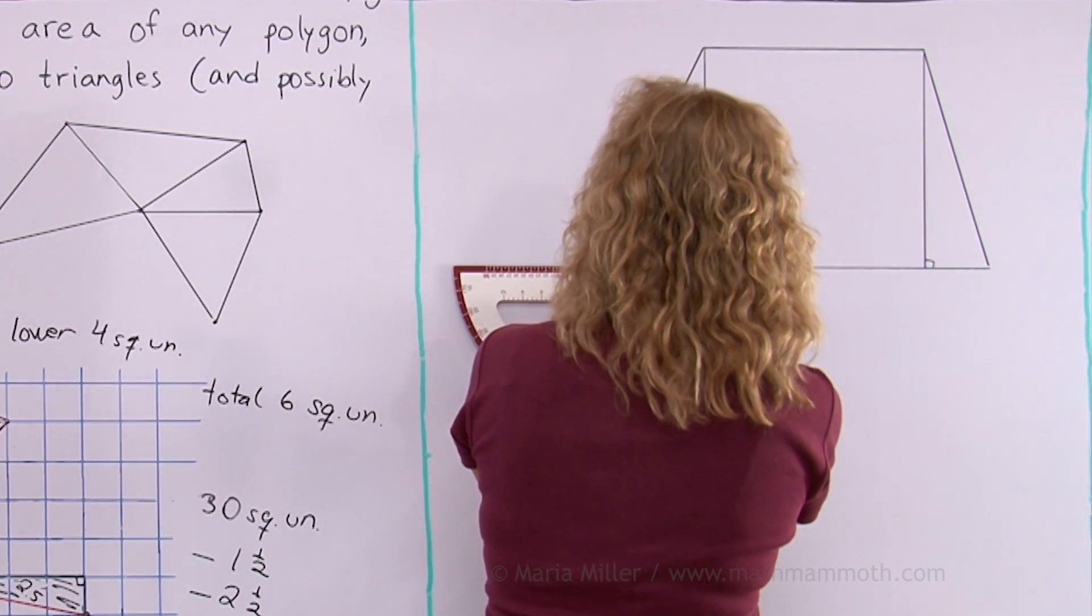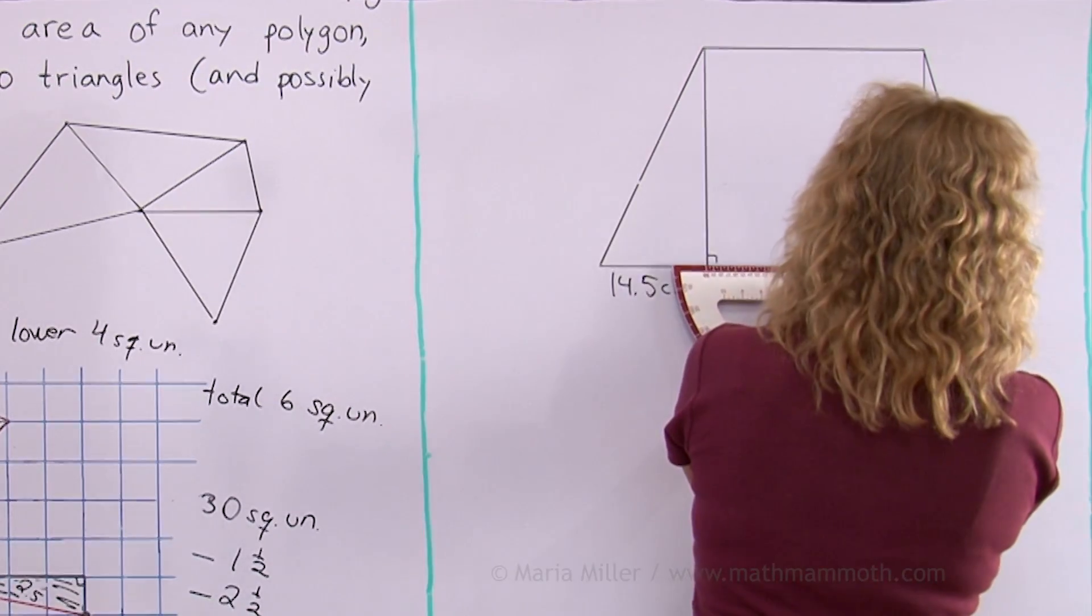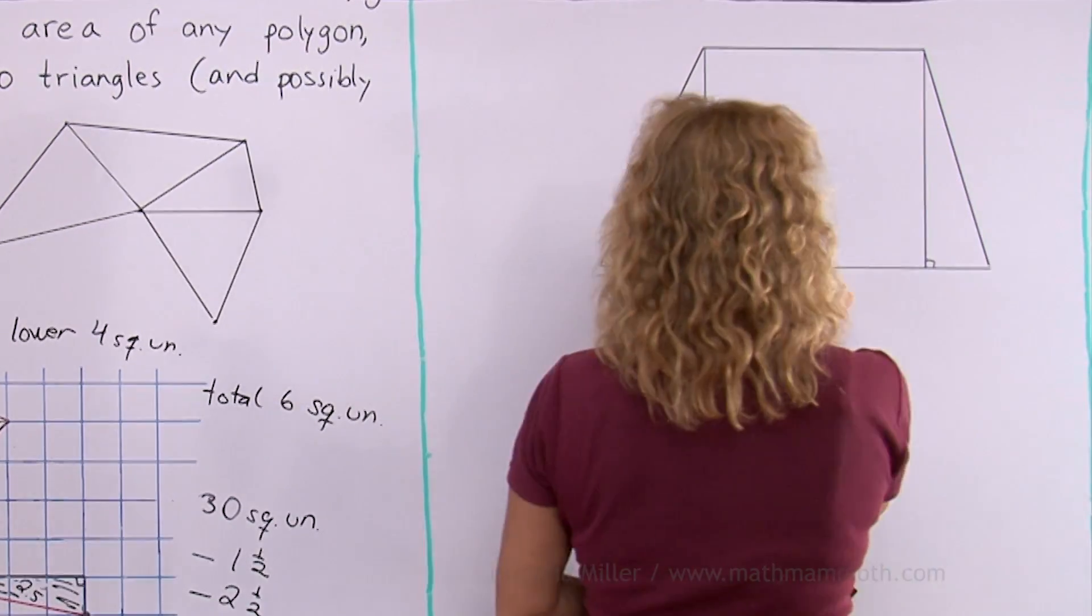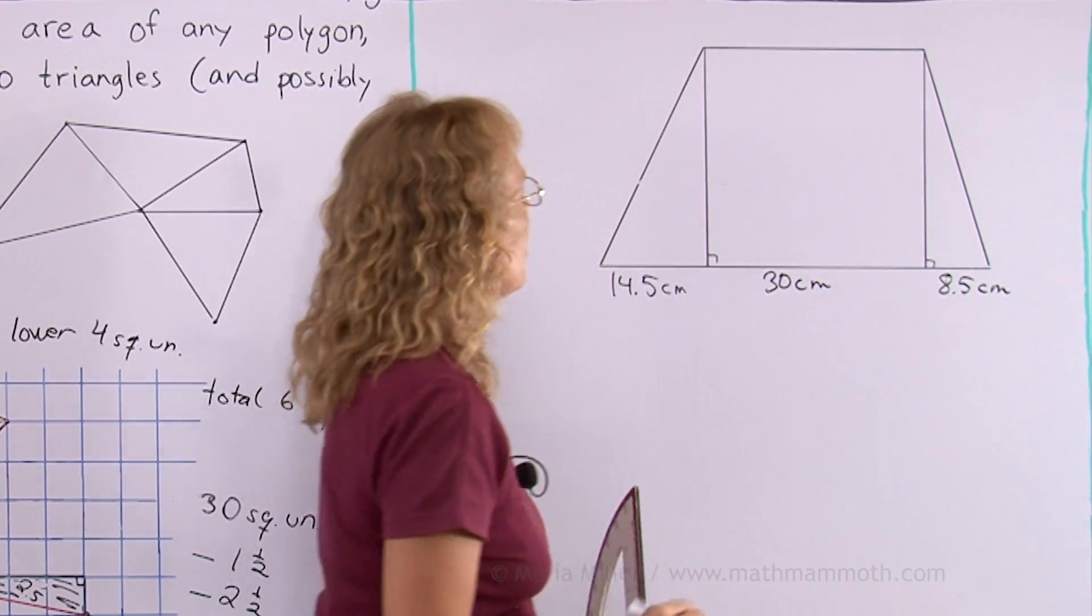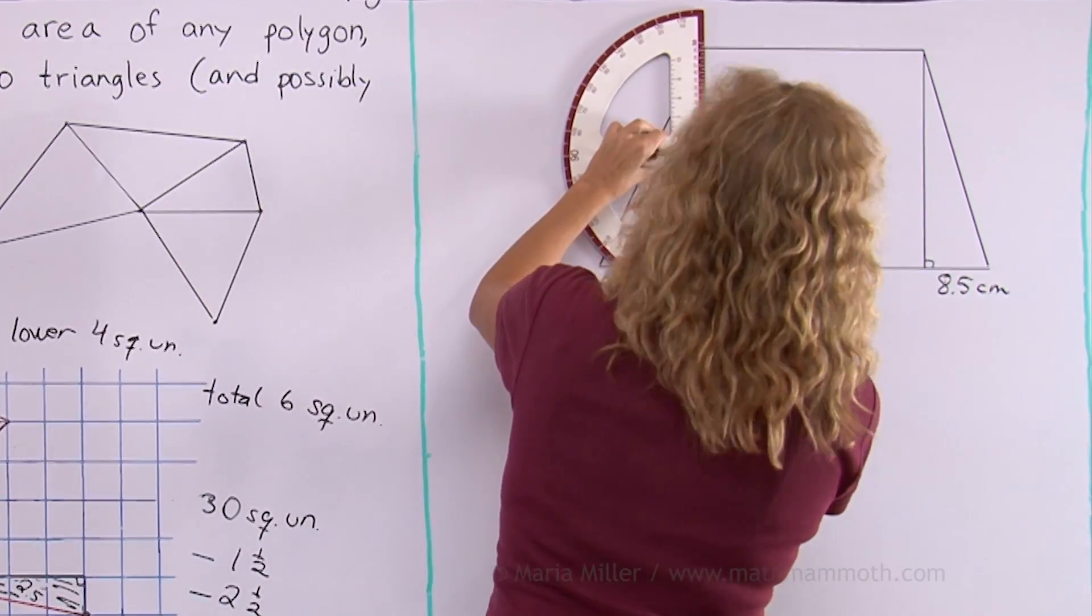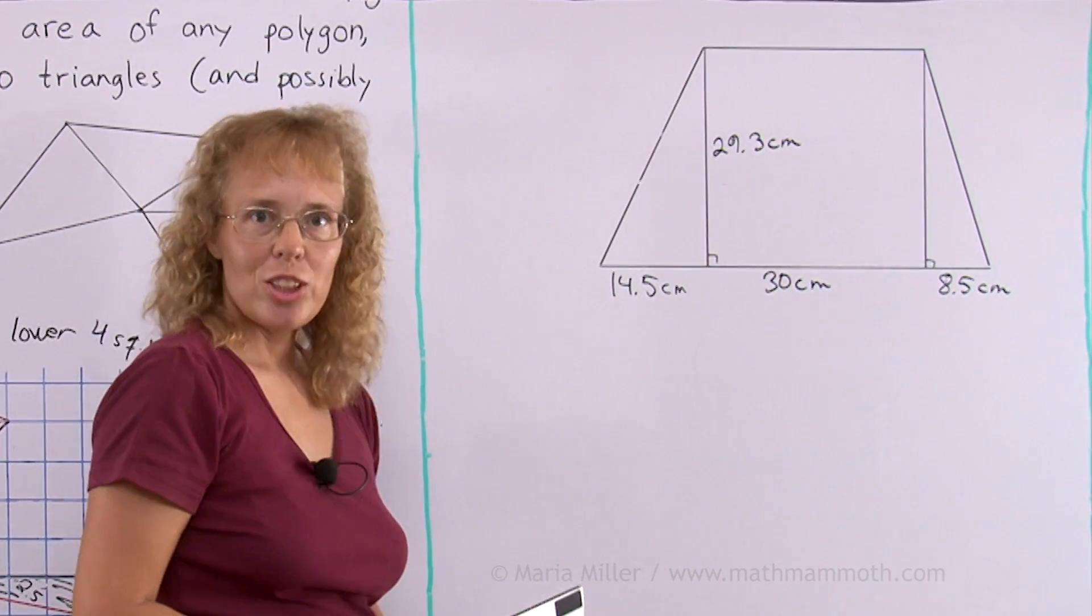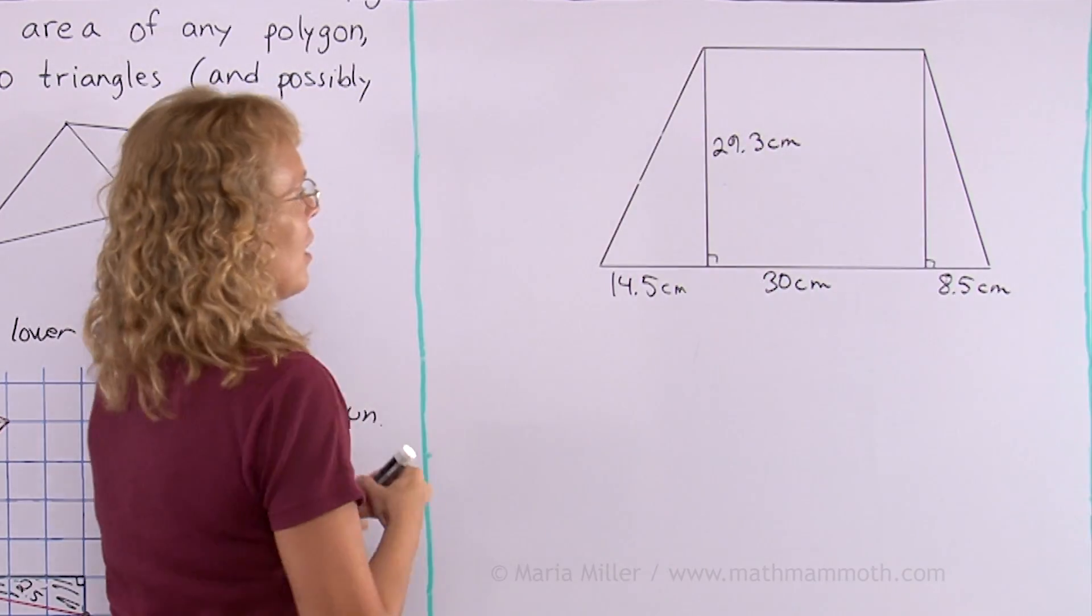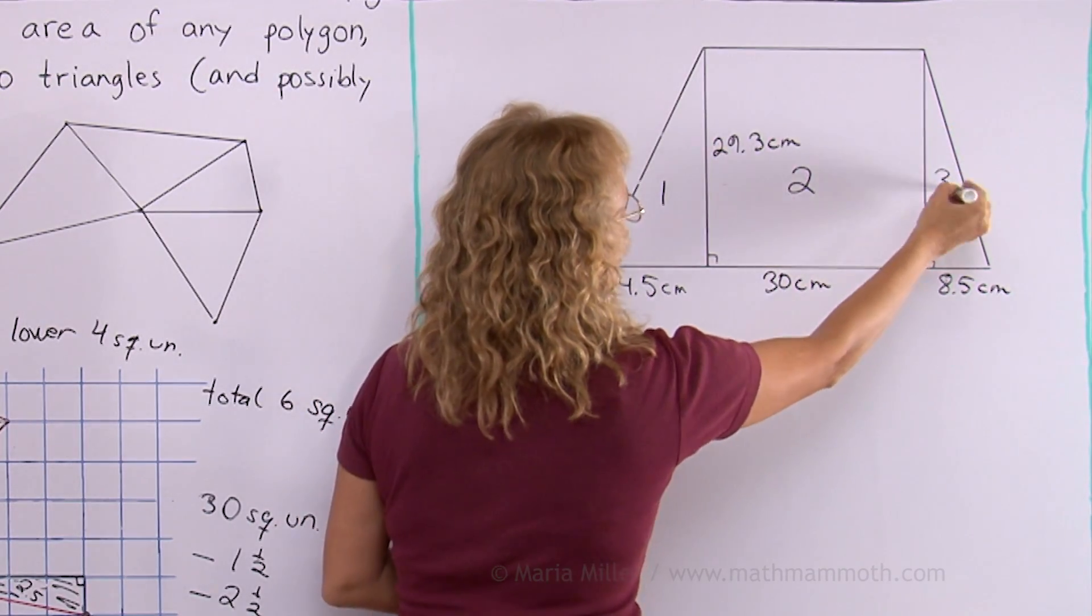This triangle has a base of 14.5 centimeters, this rectangle is 30, and this is 8.5. Then I need the height. Now I'm done measuring, we are ready to calculate. Let me label this as triangle one, rectangle two, and triangle three. We'll do triangle one first.